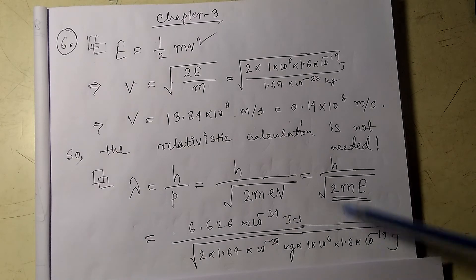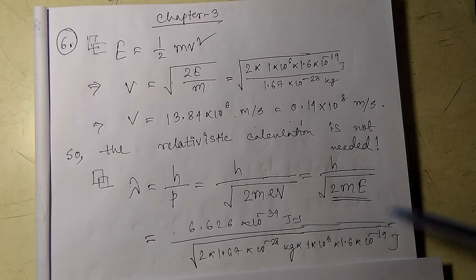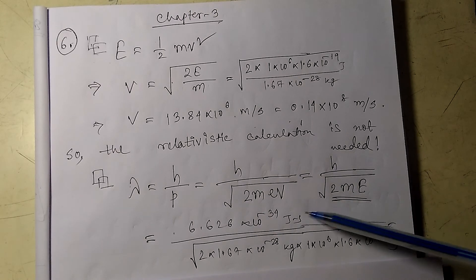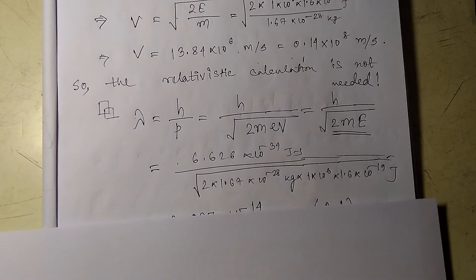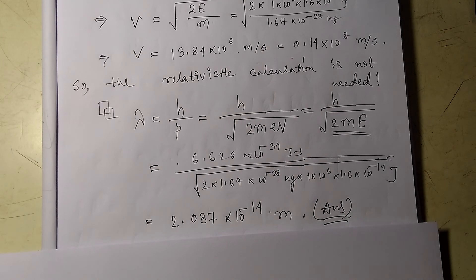Again, I am converting all these terms to SI units, so it will be in joule-seconds for h, kg for mass, and joules for energy. I have calculated the answer, which would be 2.037 times 10 to the power minus 14 meters, and this would be the wavelength of the proton.